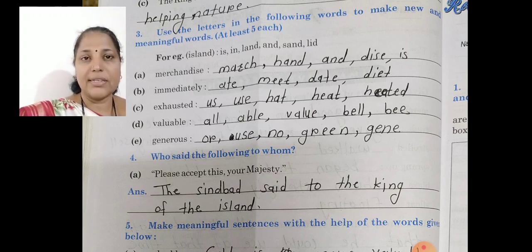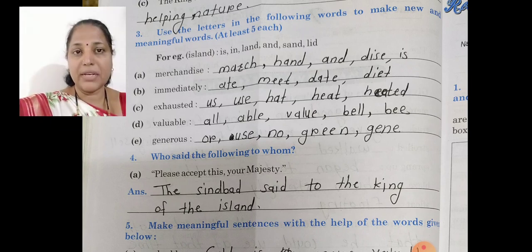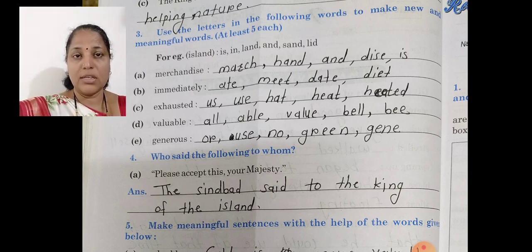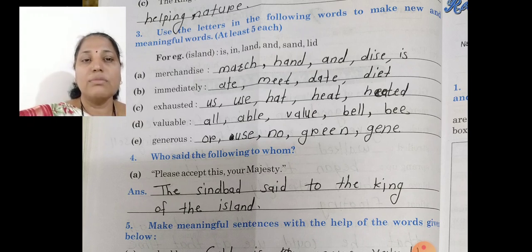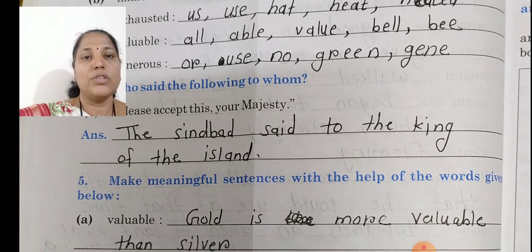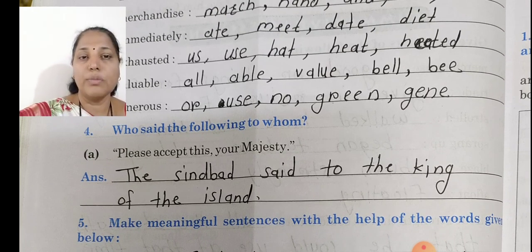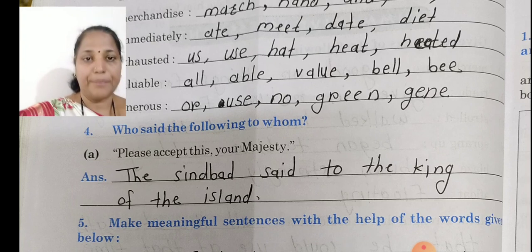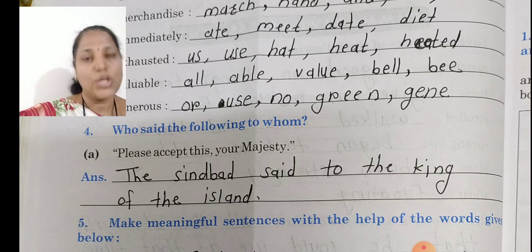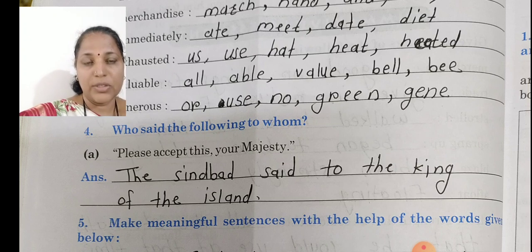Then after, the next spelling is 'jandries.' Our Question Number 4 is: who said the following to whom — kisne kisse kaha? 'Please accept this, Your Majesty' — Maharaj, aap isko accept kijiye. This sentence was told by Sinbad to the King of the Island. So you write here: Sinbad said to the King of the Island.